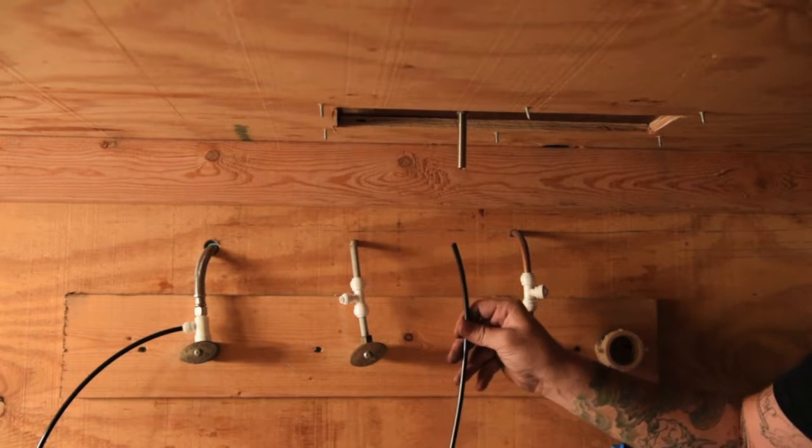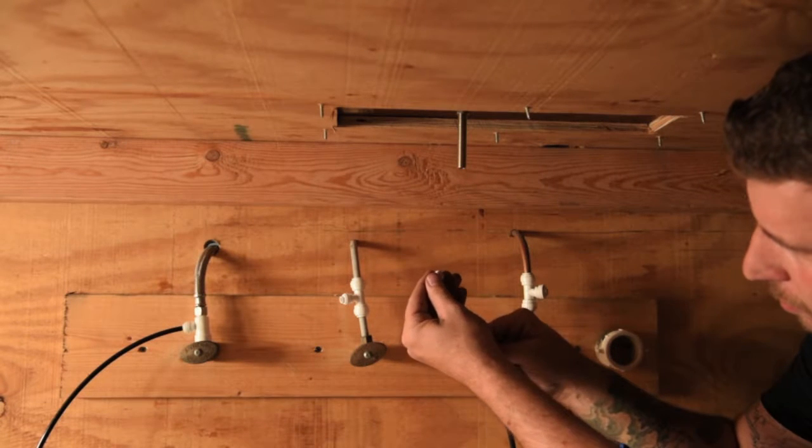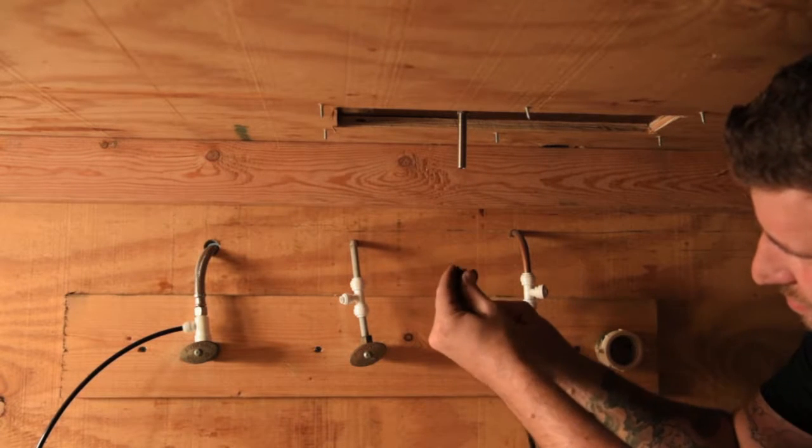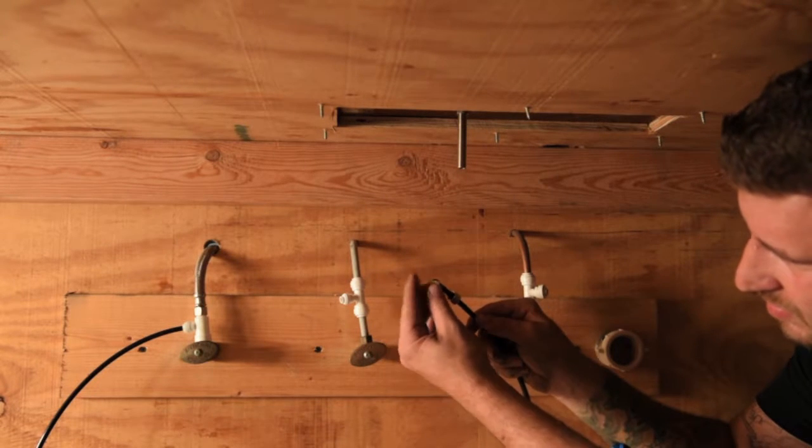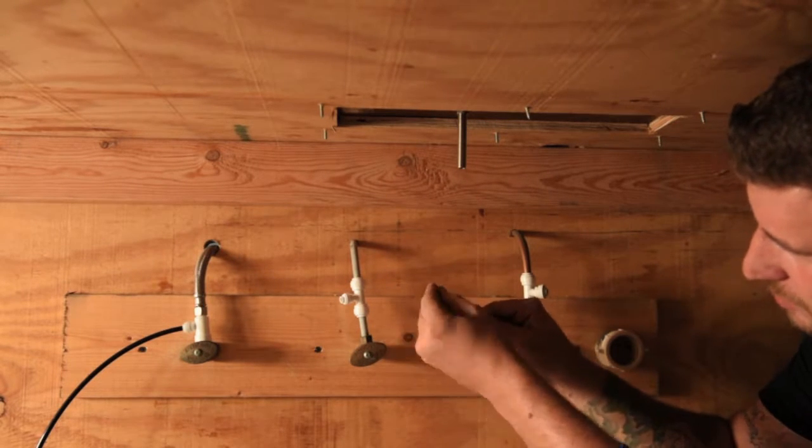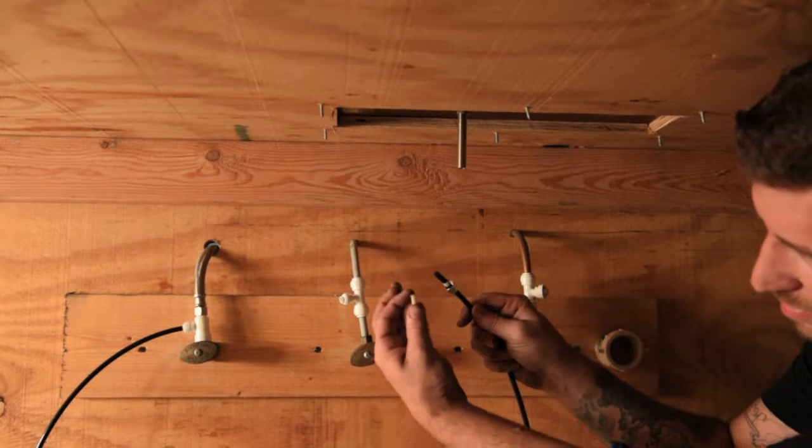Take a few feet of polyline and place your compression nut a few inches down the line. Next is the compression ring. Last, insert the ferrule into the tip of the polyline.